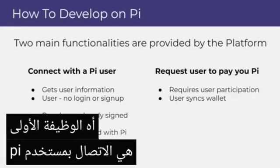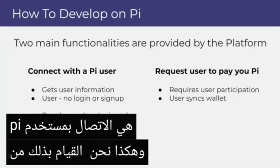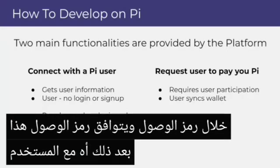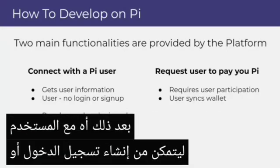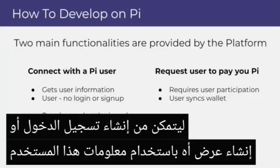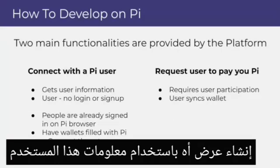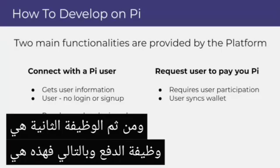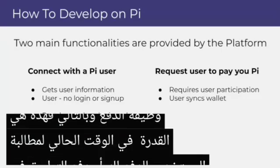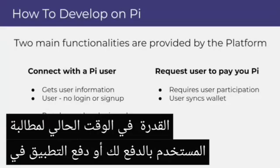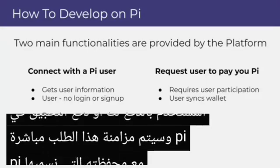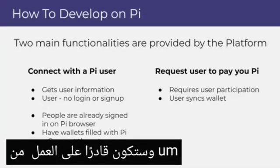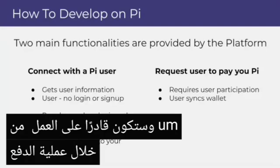The first functionality is connecting with a Pi user. We do this through an access token, which corresponds to a user to be able to create a sign-in or to create a display utilizing that user's information. The second functionality is payment functionality — the ability to request a user to pay you or to pay the application in Pi. That request will sync directly to their wallet, which we call the Pi wallet, and you'll be able to work them through the payment process to facilitate that.